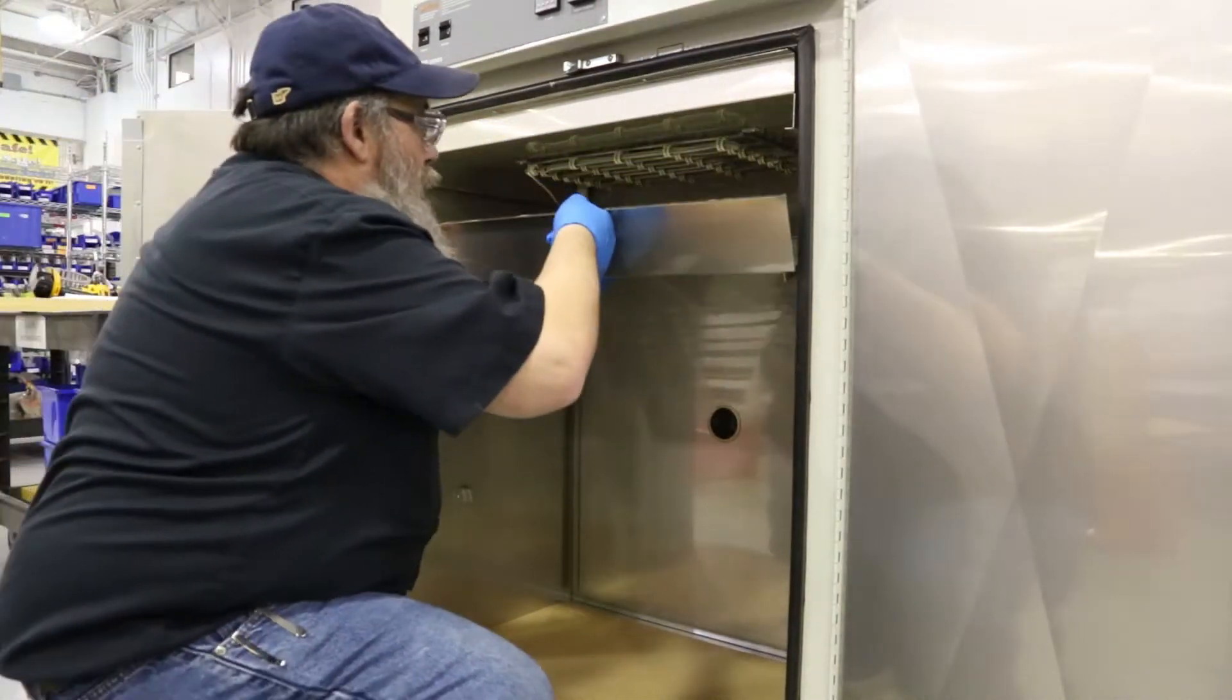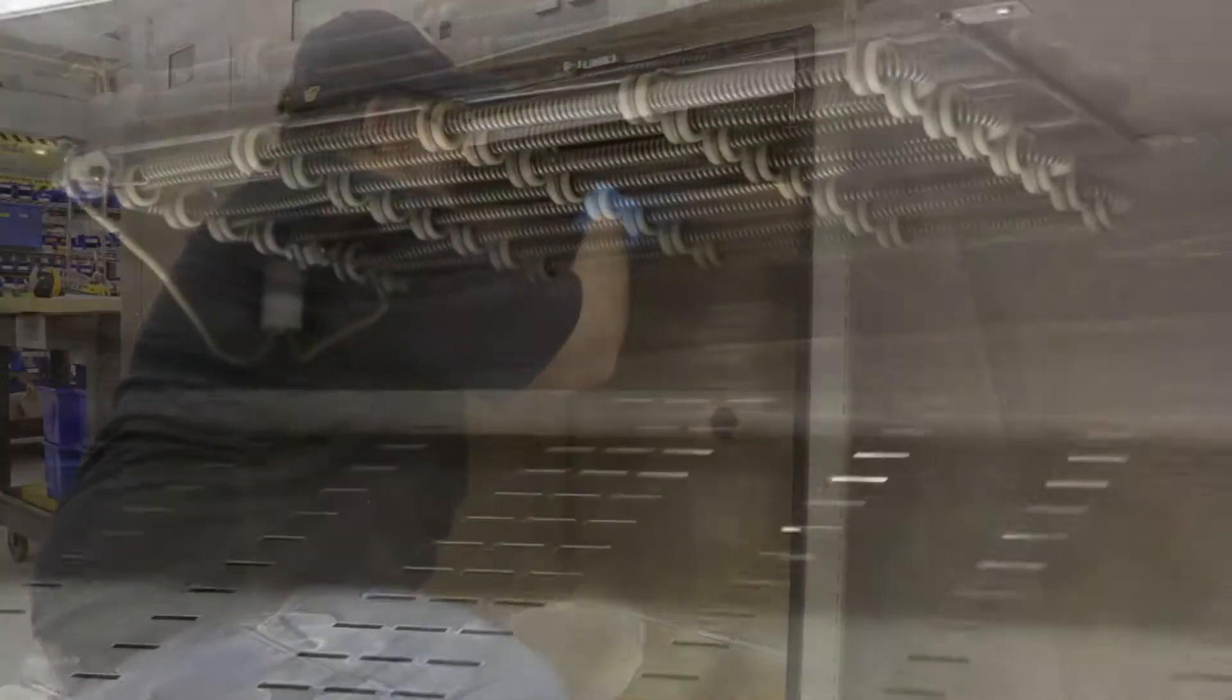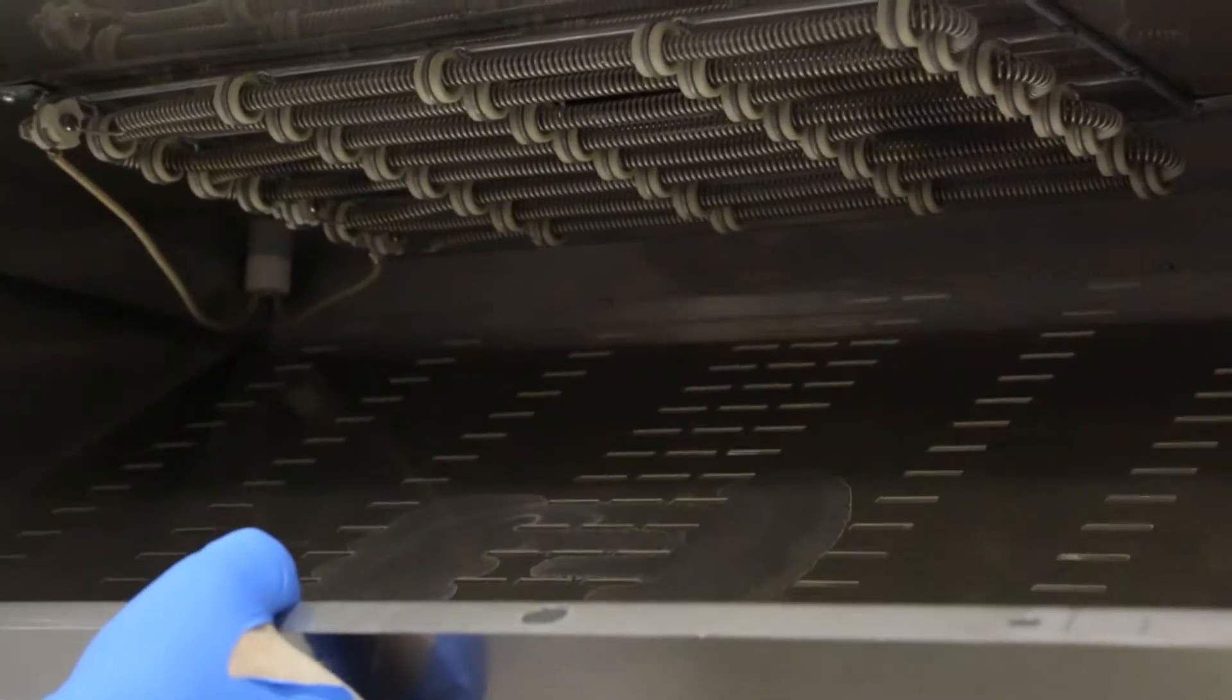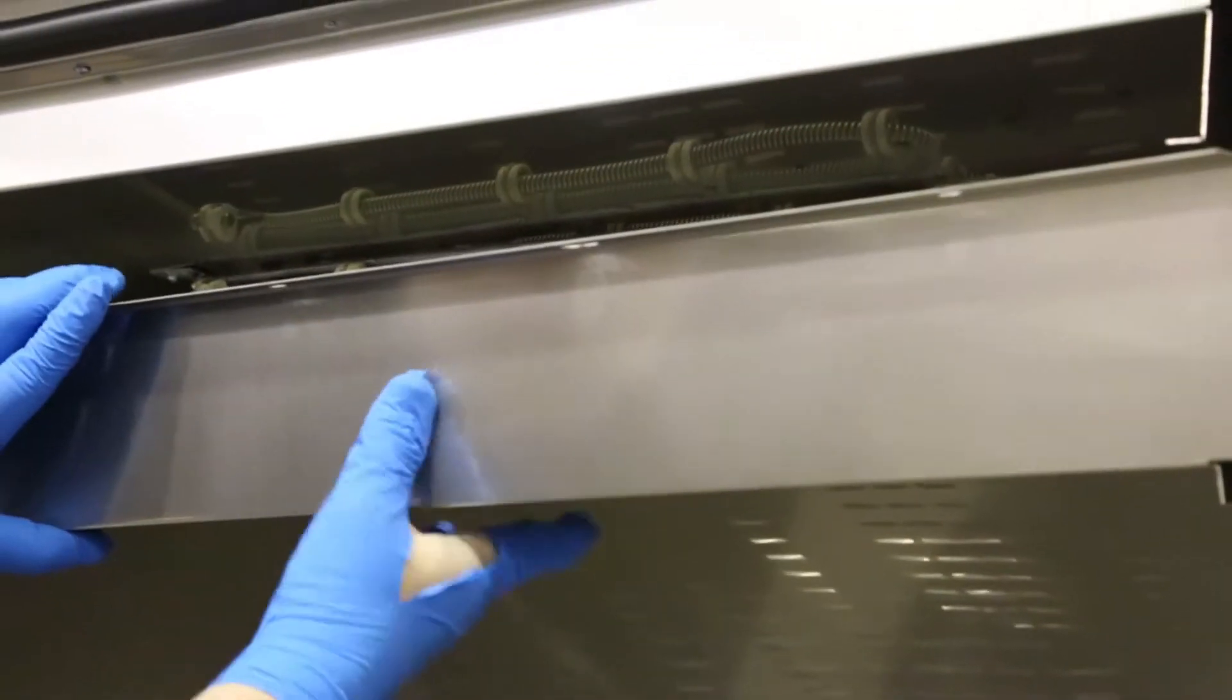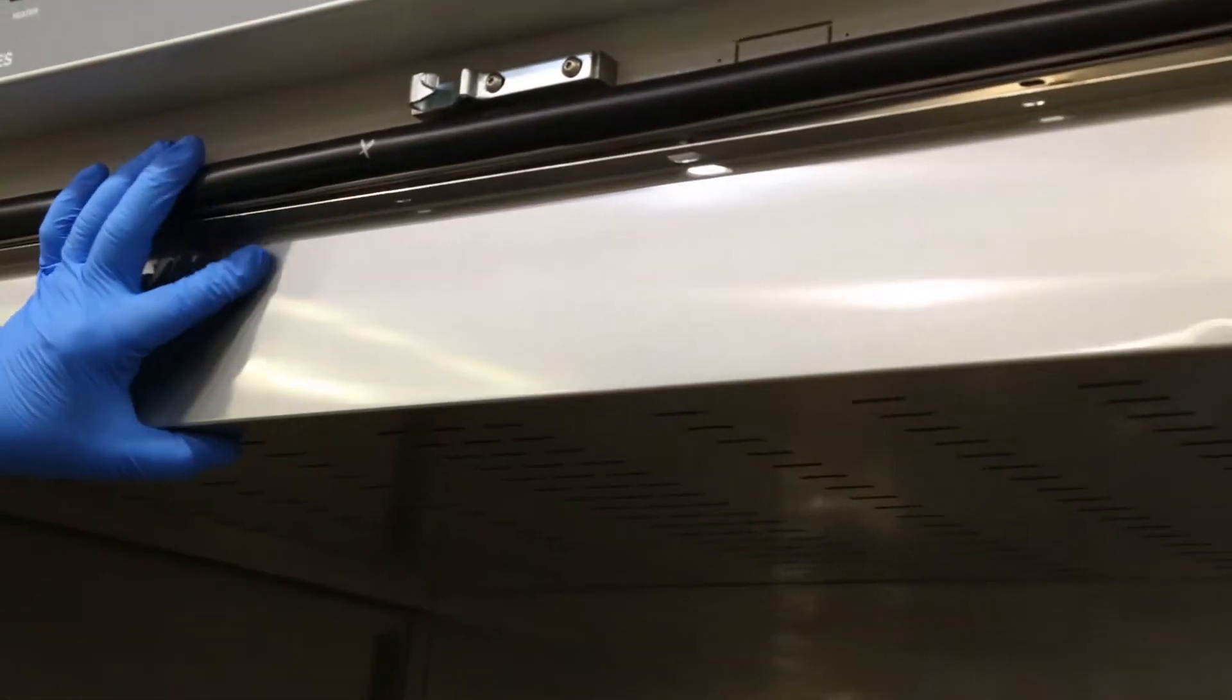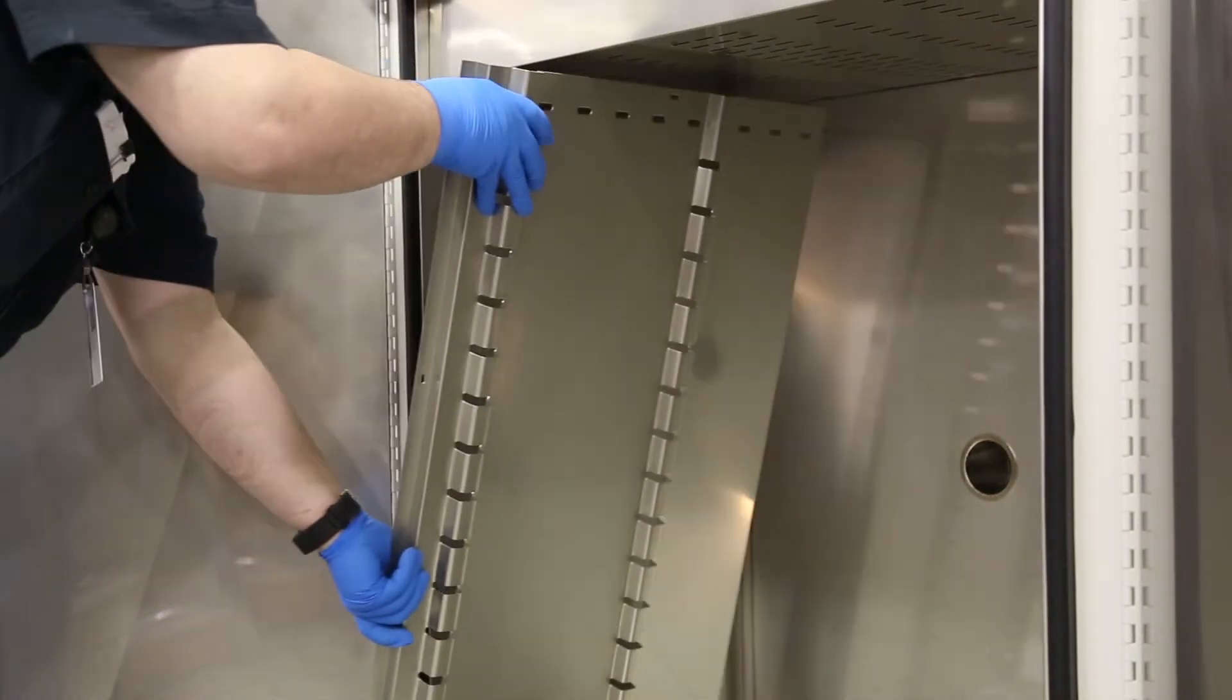When replacing the heater cover, be sure to set the back panel into the back channel. And then replace the three screws on the front. Replace the side panels and you're finished.